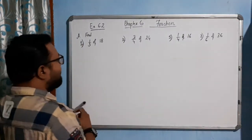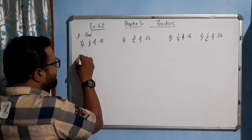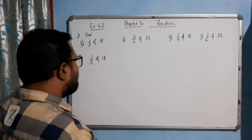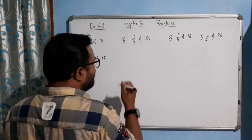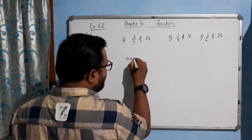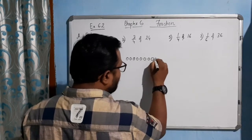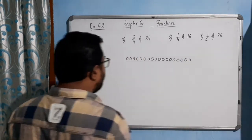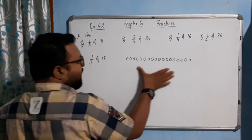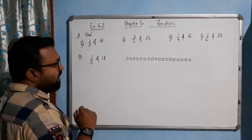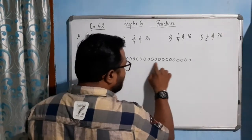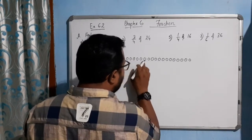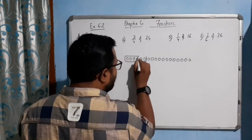Let's do this one. 1 by 3 solution. 1 by 3 of 18. Let's draw 18 — suppose 18 balls here. I'm drawing 18 parts. So this 18 parts I have to divide into 3 equal parts. Take 1, 2, 3, 4, 5, 6 — if I take this set as 1 part.